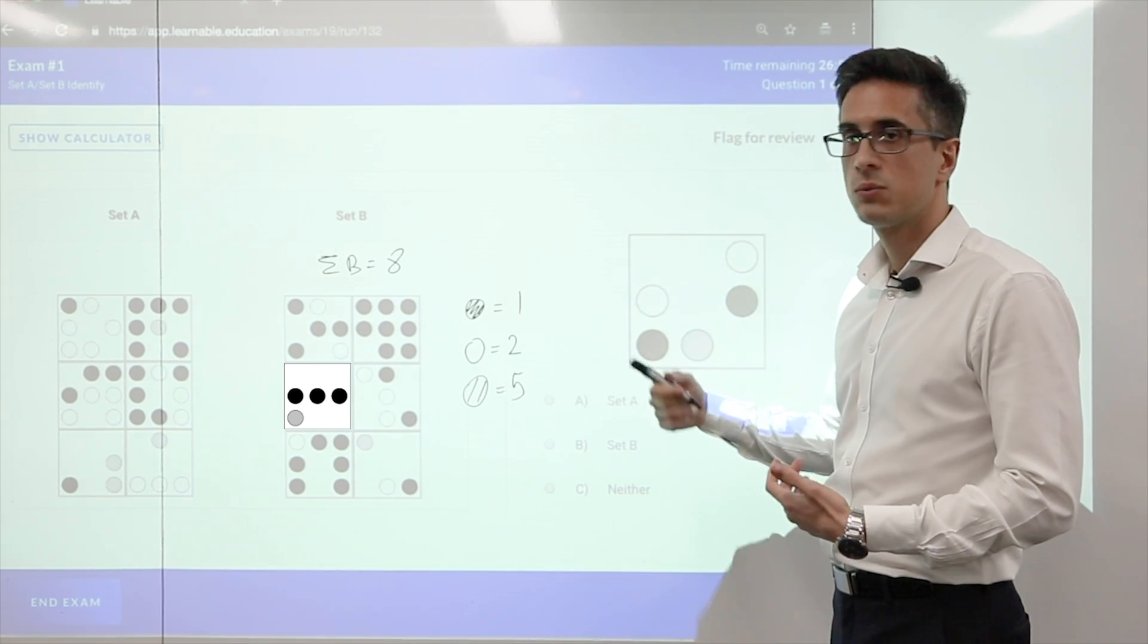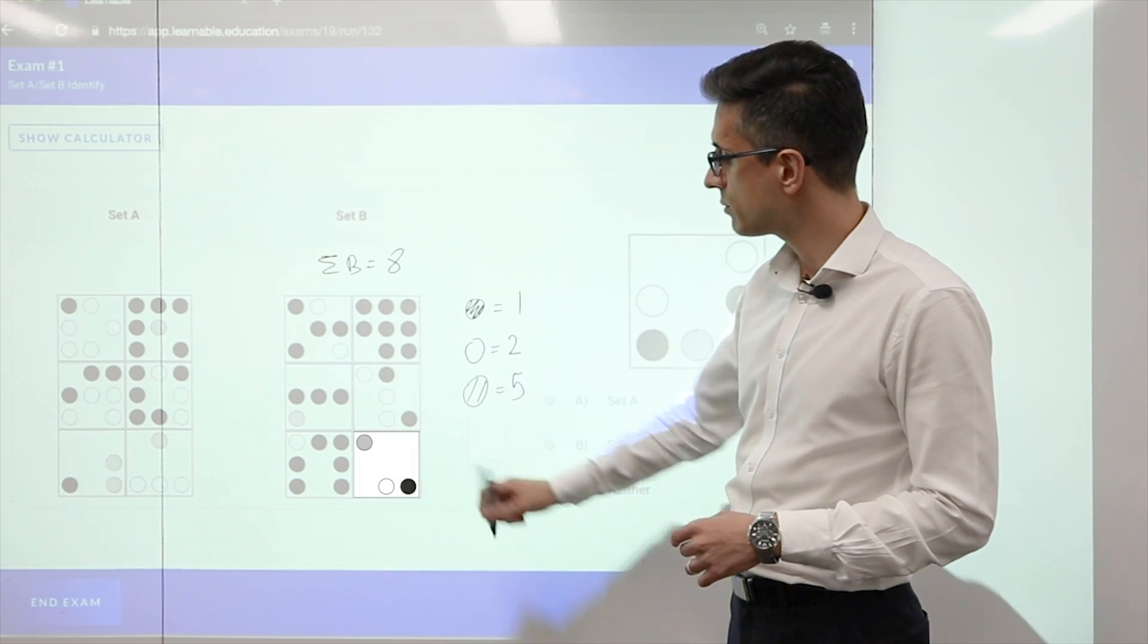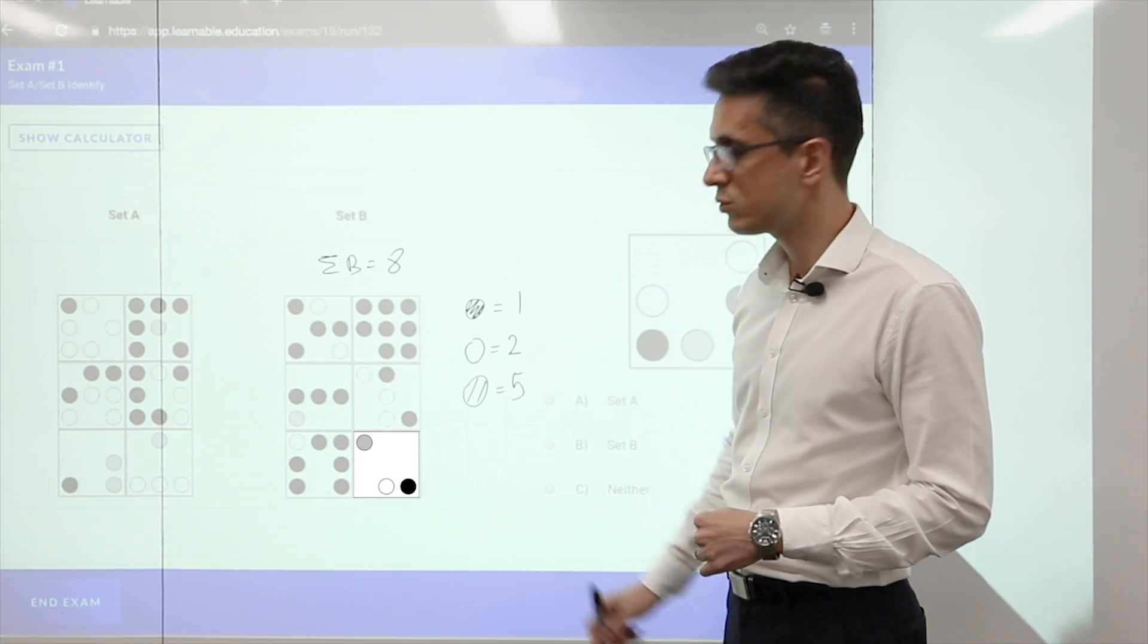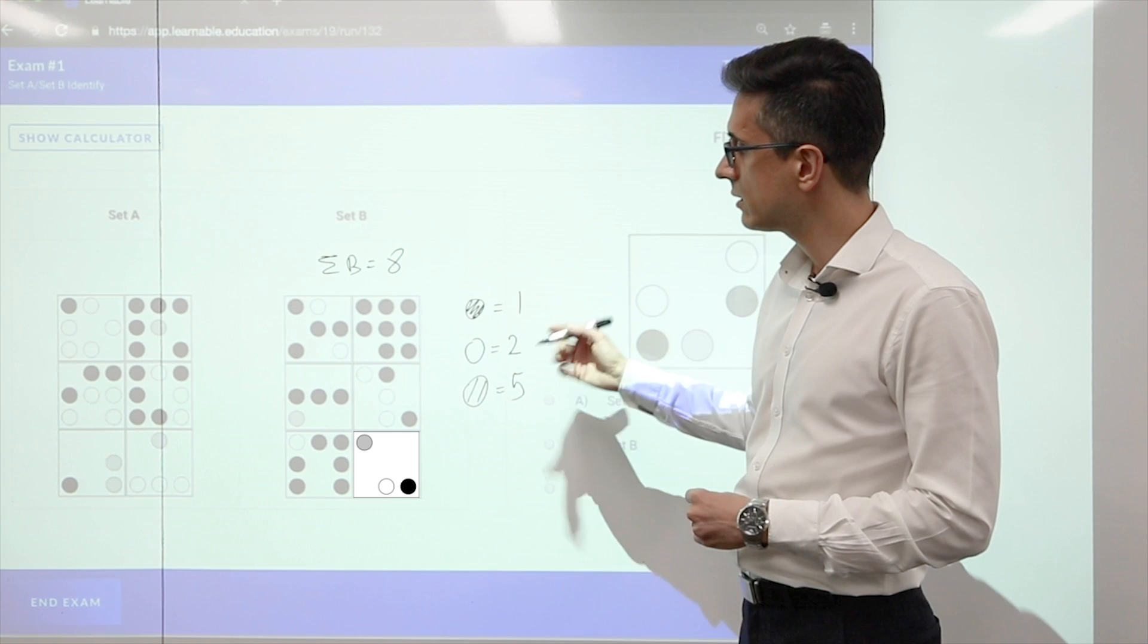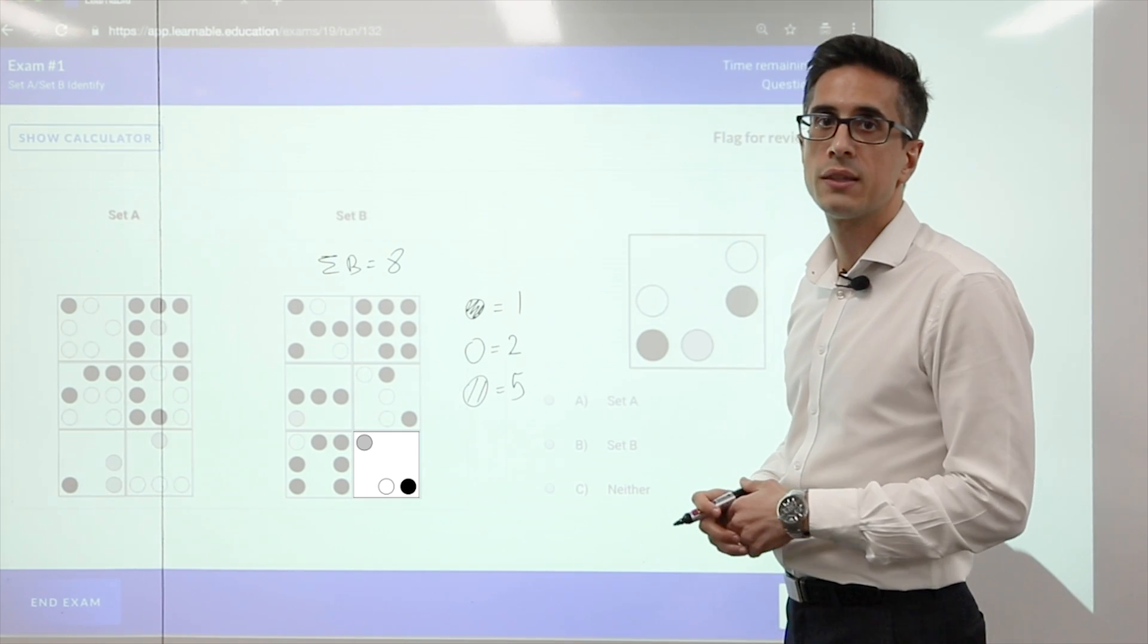And then I can check with the other squares to see if this is true. So if I use the bottom right square, I have 5 plus 2 plus 1 gives me 8. And if I check with the other ones, I would find that the same thing is true.